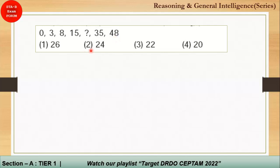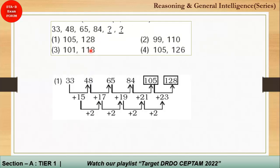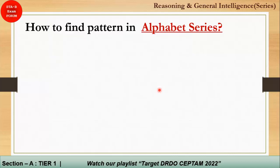The next question involves a double operation. There is an initial pattern, but arriving at the expected next term requires applying two operations, with a difference of 2 in the second operation. The correct answer for this question is option number 4.